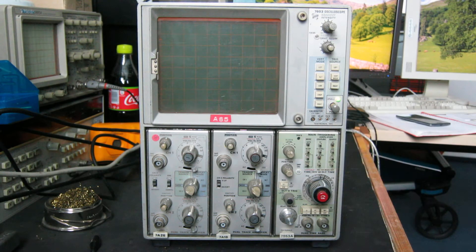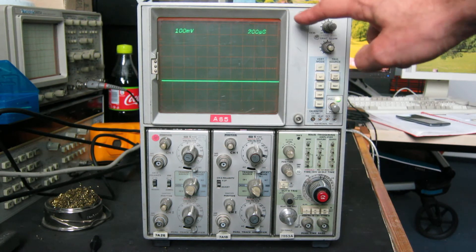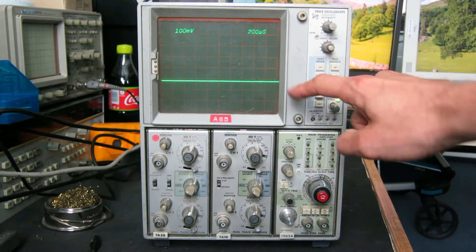I'll switch the scope on now and let it warm up for a moment. You can see the graticule illuminations come on, and as the tube warms up, we have the readouts at the top of the screen and the first of the traces.